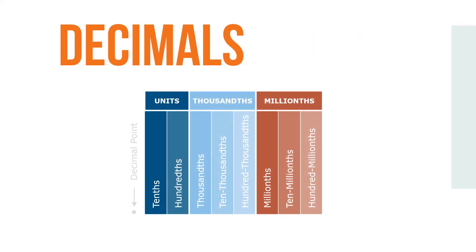The place value chart here expands the whole number chart to include the places representing decimals. In decimals, the value of each place starting at the decimal point and moving from left to right decreases by a factor of 10. The names of the places on the decimal side end in -ths. They are tenths, hundredths, thousandths, ten-thousandths, hundred-thousandths, millionths, and so on.